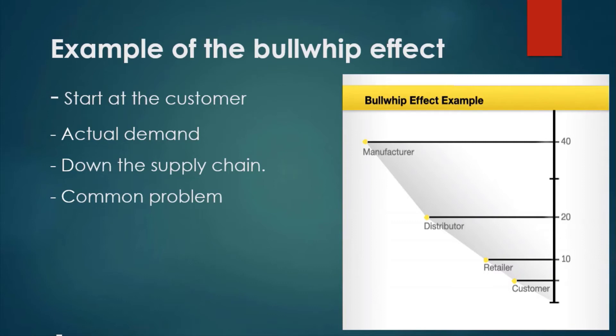So 40 units have been produced for a demand of only 8 units, meaning the retailer will have to increase demand by dropping prices or finding more customers through marketing and advertising. Although the Bullwhip Effect is a common problem for supply chain management, understanding its causes can help managers find strategies to avoid this effect.